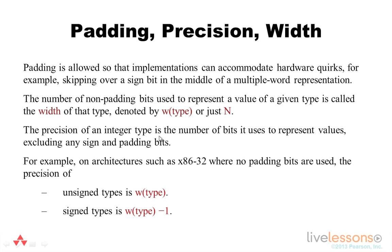The precision is the number of bits used to represent the value, which excludes any sign or padding bits. For example, on an architecture such as x86-32 that doesn't use padding bits, the precision of an unsigned type is equivalent to the width of the type, and the precision of a signed type is one less than the width of the type, which subtracts the bit used for representing the sign.